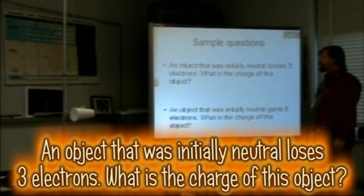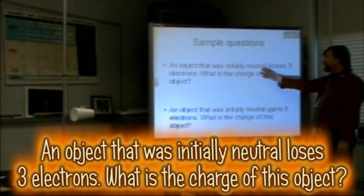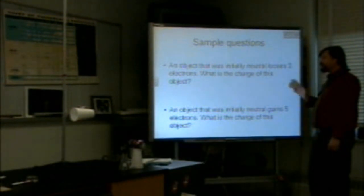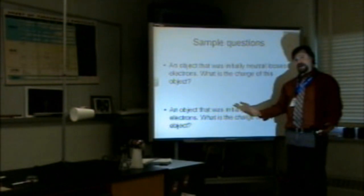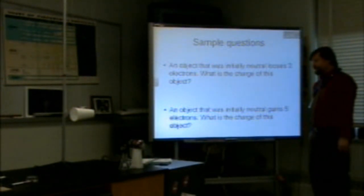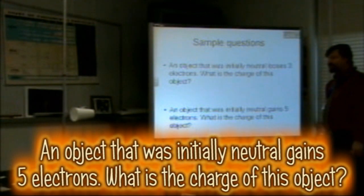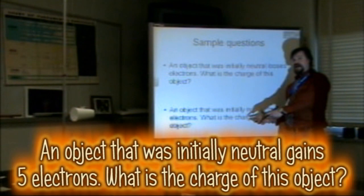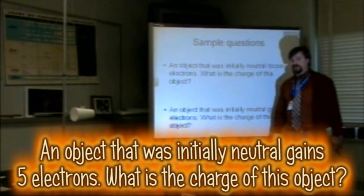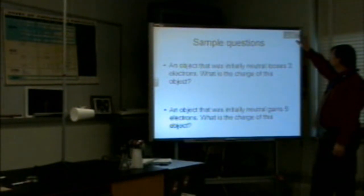Sample questions: An object that was initially neutral loses three electrons. What is the charge of this object? It was neutral and lost three electrons, meaning it now has three more protons than electrons — so the charge is positive three e. An object that was initially neutral gains five electrons now has five negative elementary charges added to it, giving an overall charge of negative five e.